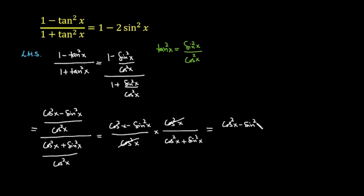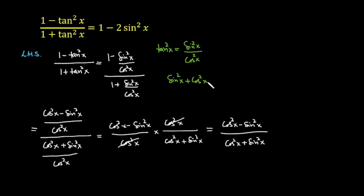We know the Pythagorean identity: sin square x plus cos square x is equal to 1. So in the next step I am going to replace cos square x plus sin square x with 1 in the denominator. This expression is further equal to (cos square x minus sin square x) over 1, which is simply cos square x minus sin square x.